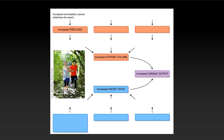This is the Frank-Starling Law of the Heart, analogous to stretching a rubber band. The more you fill the ventricle, the more the walls are stretched and the greater the ability to recoil — greater elastic recoil of the ventricles. The more you stretch a rubber band, the more it snaps when you let go. Frank-Starling Law: proportional increases in stroke volume with preload.